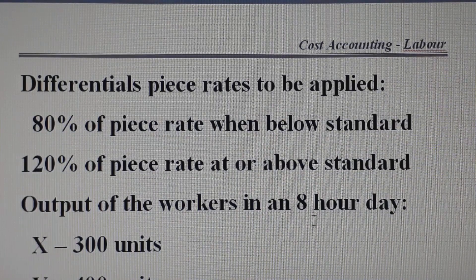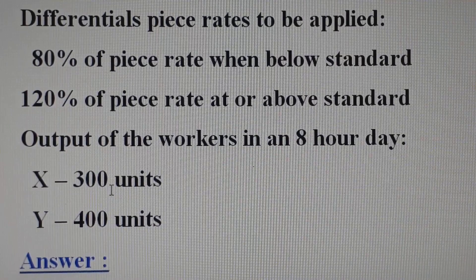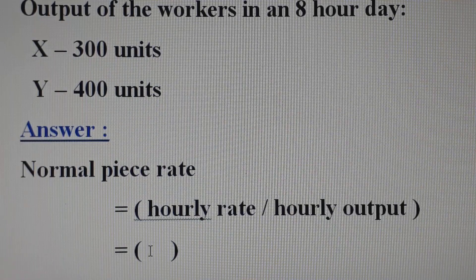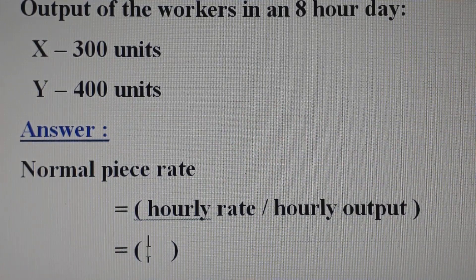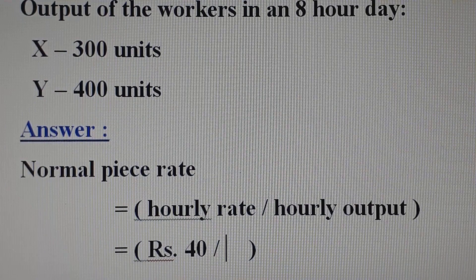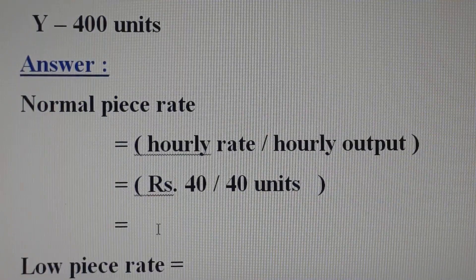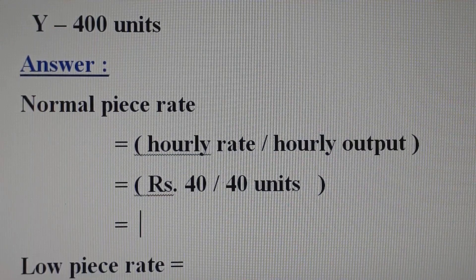The output of the workers is measured in an 8-hour day. To calculate the normal piece rate, we take the hourly rate divided by the hourly output: 40 divided by 40 units. The normal piece rate per unit works out to Re. 1 per unit.